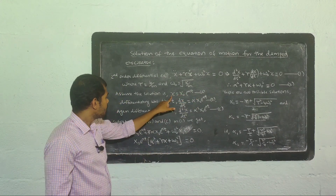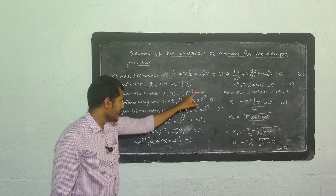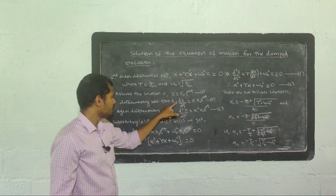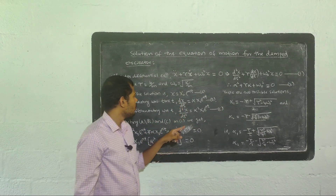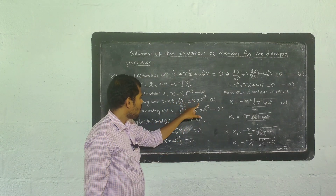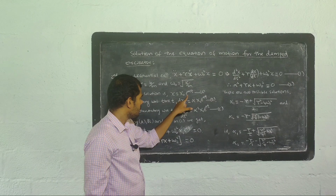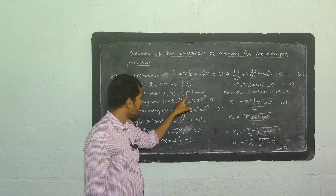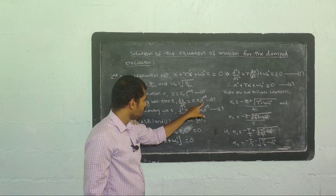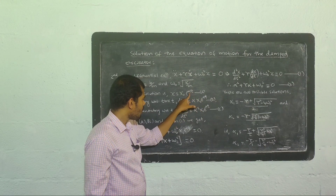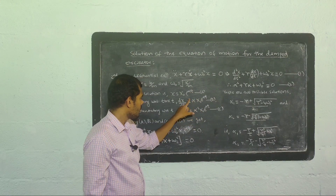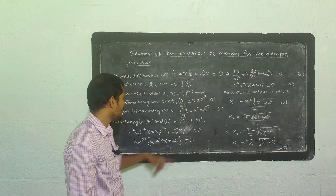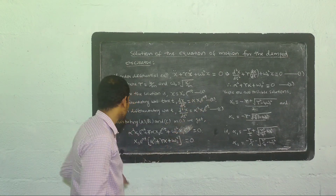We differentiate this equation with respect to time t. We get dx/dt: since x₀ is constant, differentiating e raised to alpha t gives e raised to alpha t times alpha. So dx/dt equals alpha x₀ e raised to alpha t. This is equation b.